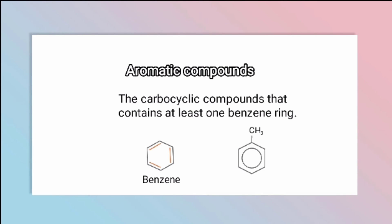Aromatic compounds are those that contain at least one benzene ring. Benzene has six carbon atoms arranged in a ring. We draw the structure of benzene, and we also discuss toluene, which has a methyl group attached to the benzene ring.